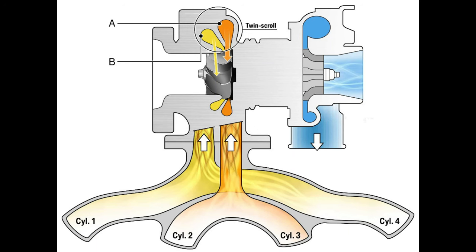Nowadays there are techniques to avoid turbo lag. A twin-scroll turbo effectively brings together twin turbocharging into one neat package. Using two inlets for the exhaust gases instead of the conventional single inlet, this form of turbo is designed to operate at small and high exhaust gas flow rates, reducing the effects of turbo lag. The first inlet is designed for lower engine speeds where exhaust gas flow rate is low and is therefore small in diameter. This will maximize pressure on the impeller blades where most conventional turbos would be struggling to spool. The second inlet is consequently larger in size to deal with a high flow rate of exhaust gases.